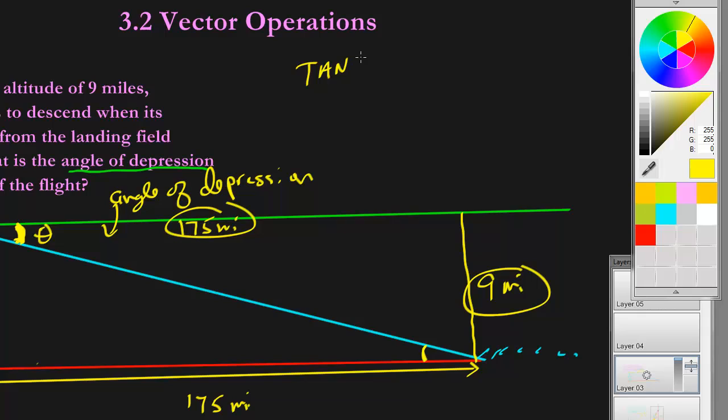We would say tangent of the angle of depression equals nine over 175. Opposite over adjacent. And so that would be, let's see here, second tangent, nine divided by 175 equals, and it would be a very small angle of 2.94 degrees. So we'll call that 2.9 degrees.